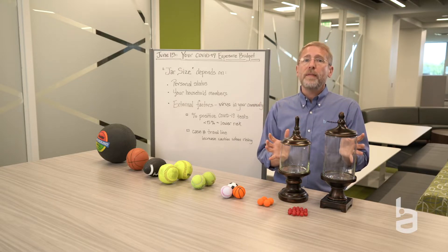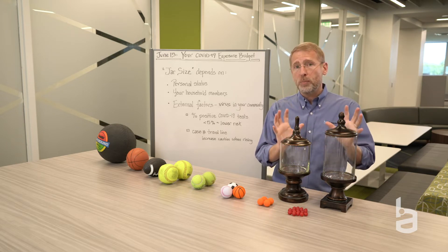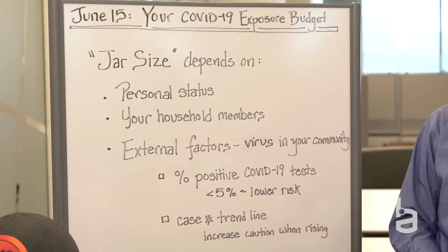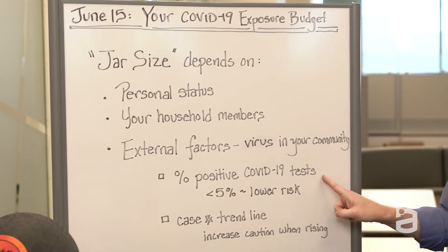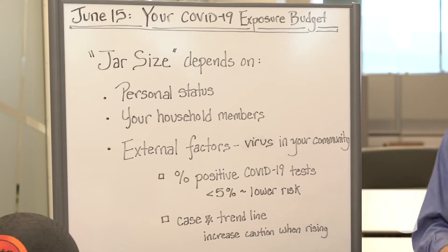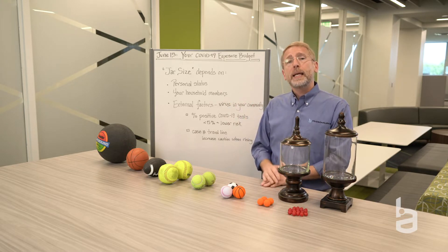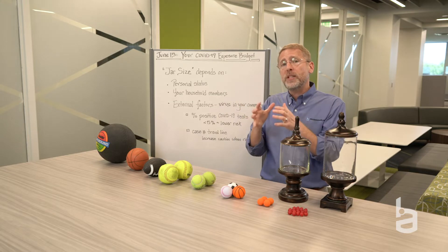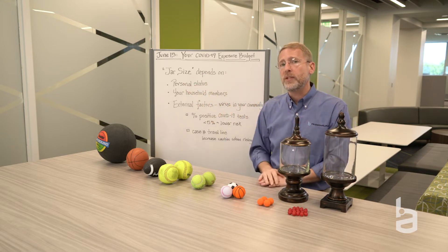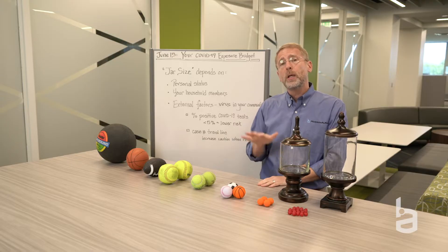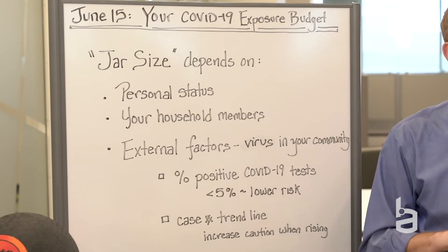There's another set of circumstances beyond information about you and the people in your household that influences how much exposure you can pack in over a two-week period — and that's what's happening to the virus in your community. The first key thing to look at is the percent of positive COVID-19 tests in your region. You can find this on your state's Department of Health website or other COVID-19 trackers. If possible, look at the positive percentage in your area — your county and the counties around you — not just the entire state. Positive percents below 5% are relatively low risk; below 2% is even better.